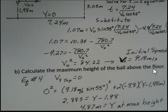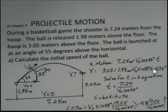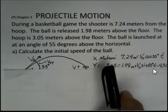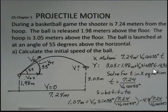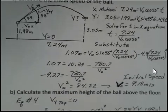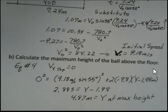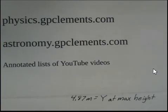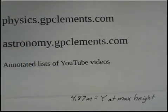Make a drawing, a little sketch of what's happening. When you write down your equations — your x and y equations — make sure the x equation has only x numbers and the y equation has only vertical numbers. Watch your plus and minus signs, figure out a way to eliminate a variable, and solve. Pause the video along the way if you need help, and ask your instructor questions. More examples are available at physics.gpclements.com and astronomy.gpclements.com — free, no registration required. Keep practicing and work your own problems.